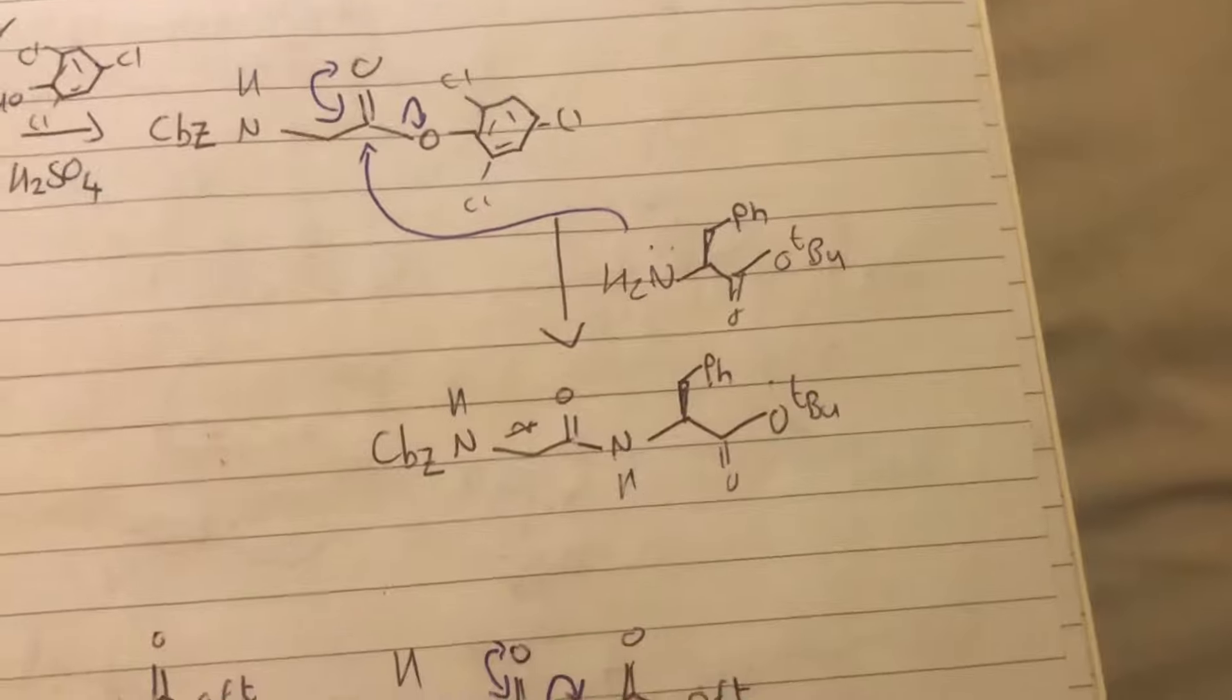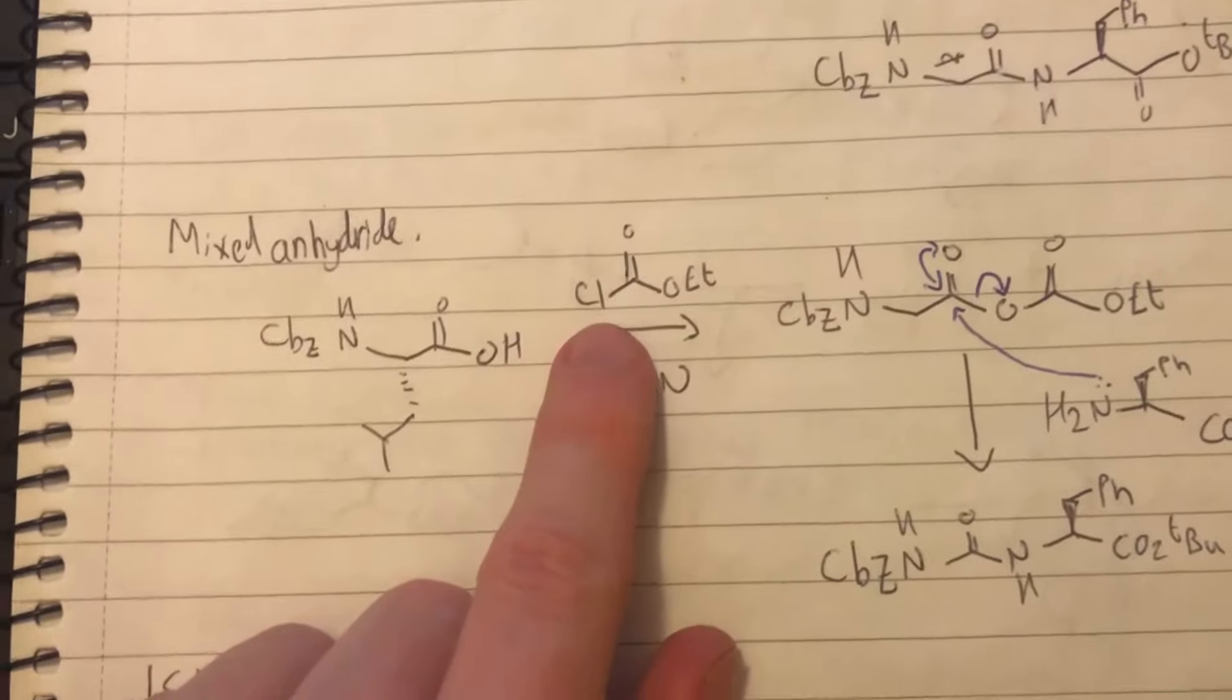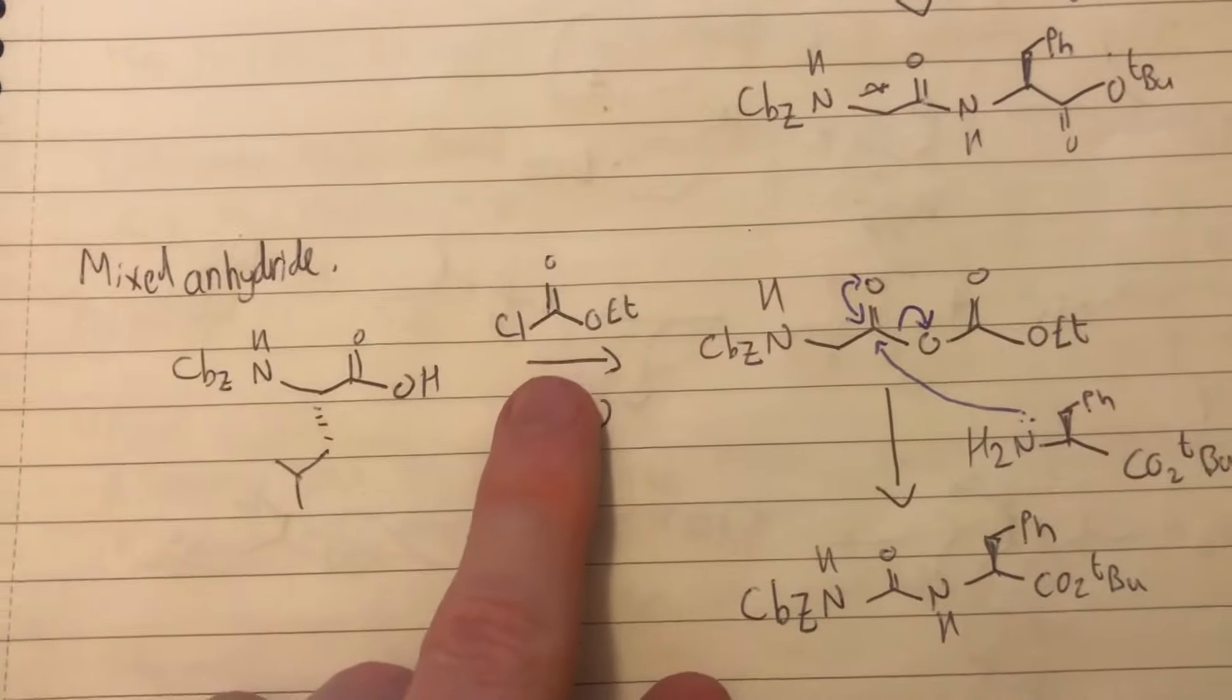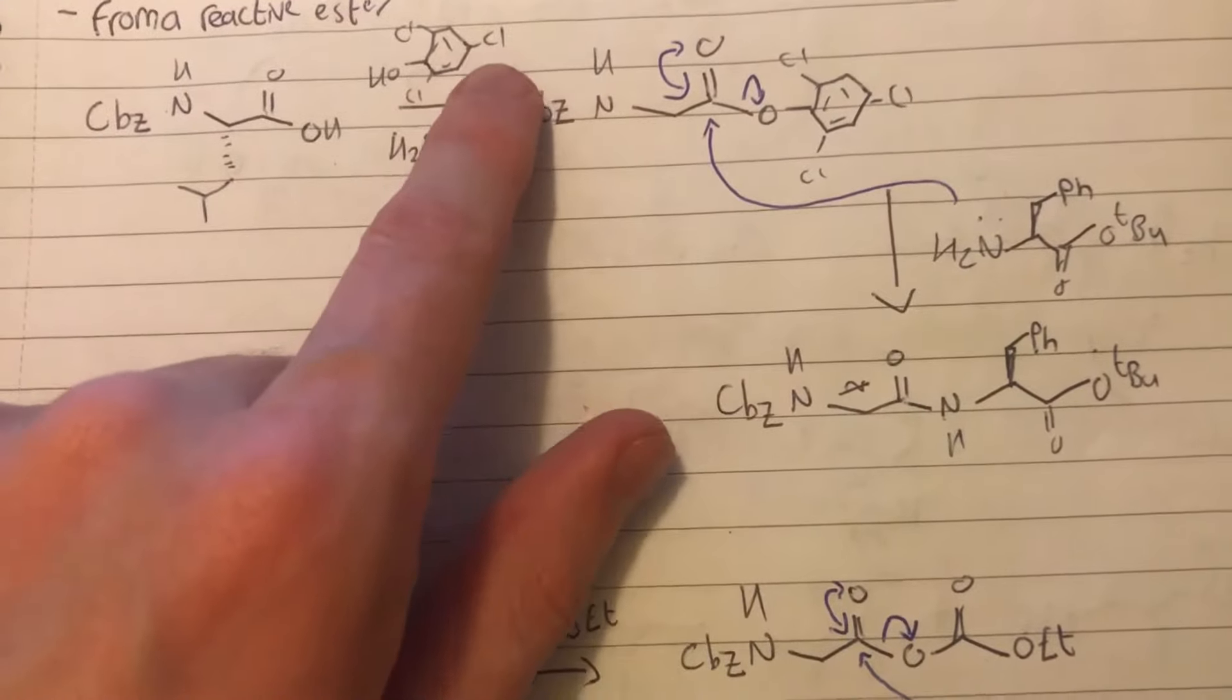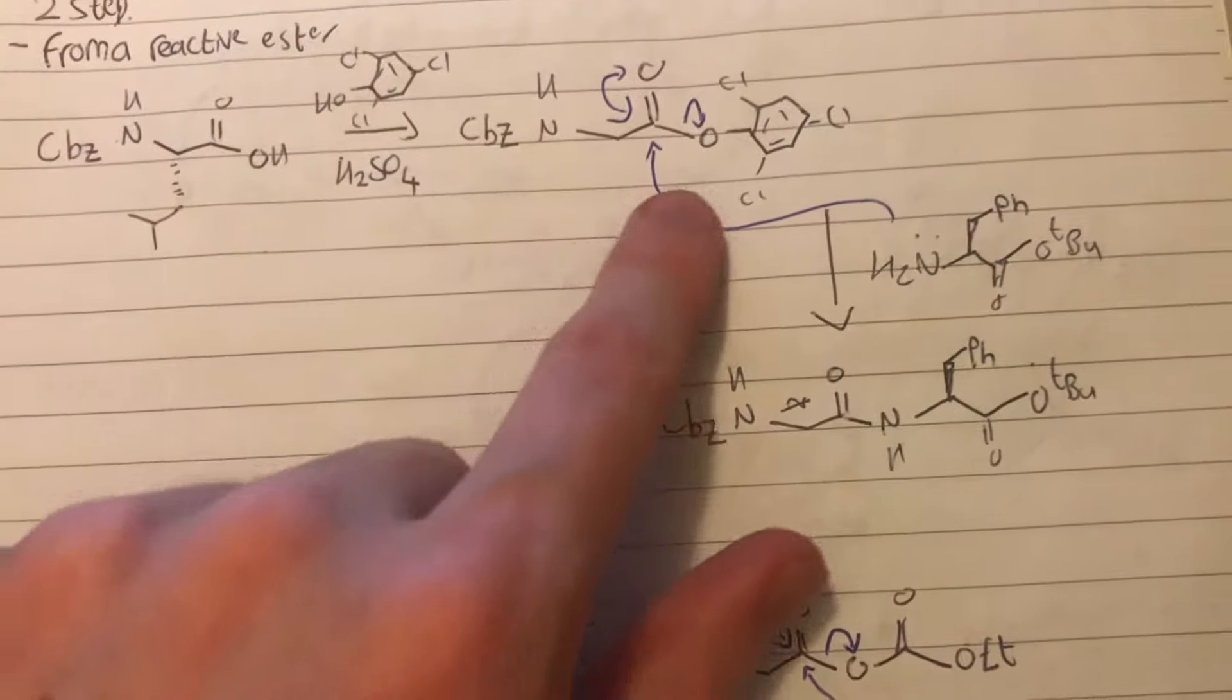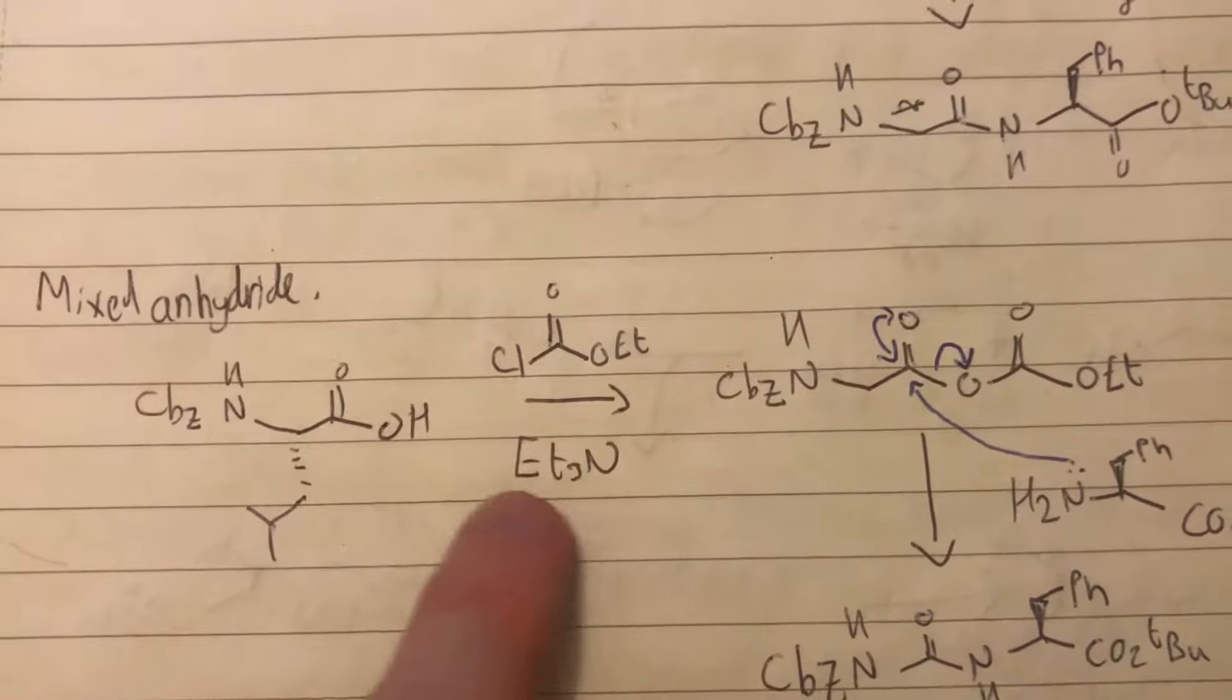That's our amino acid part. We can also do this from a mixed anhydride using a base this time. This time it is the chlorine that gets displaced. In this one you'd think the chlorine would have been displaced as well, but that's not the case because we're using an acid and that can make H2O.